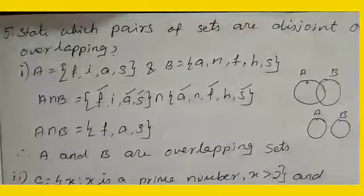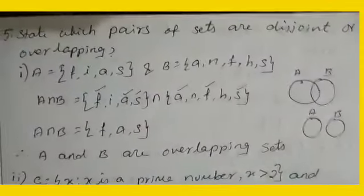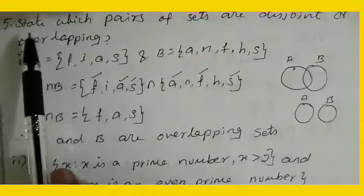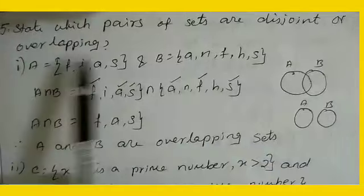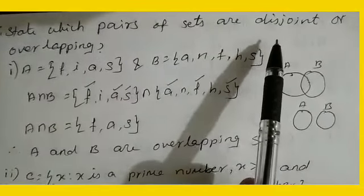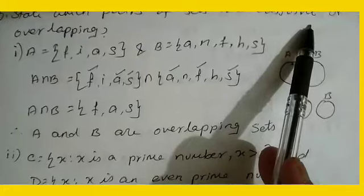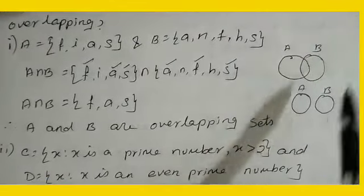This is 9th standard set language exercise 1.2, fifth sum. State which pairs of sets are disjoint or overlapping. First of all, you want to know what is disjoint. In the definition itself, I told disjoint means there is no common element.